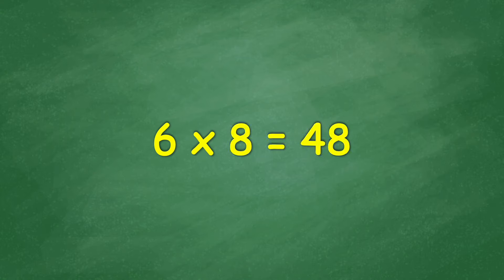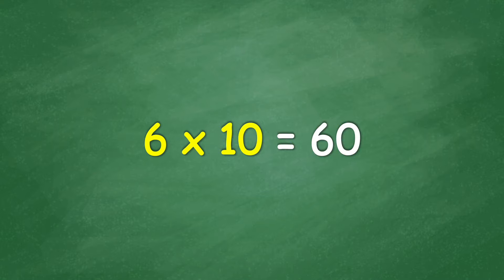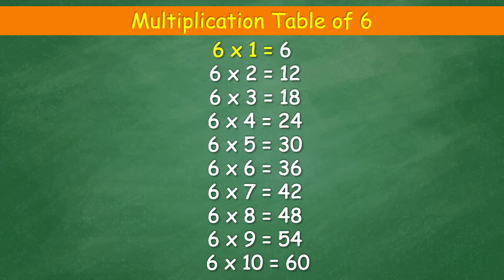6 times 8 equals 48. 6 times 9 equals 54. 6 times 10 equals 60. 6 times 1 equals 6. 6 times 2 equals 12. 6 times 3 equals 18. 6 times 4 equals 24. 6 times 5 equals 30. 6 times 6 equals 36. 6 times 7 equals 42.